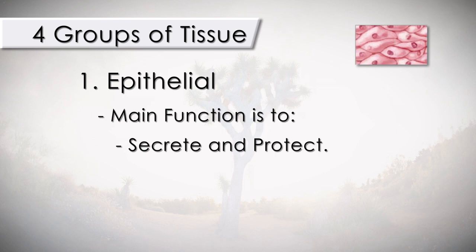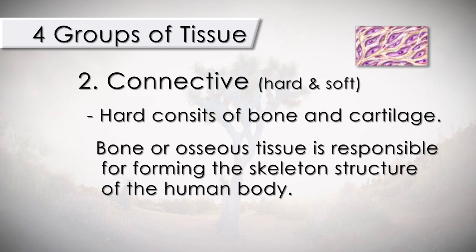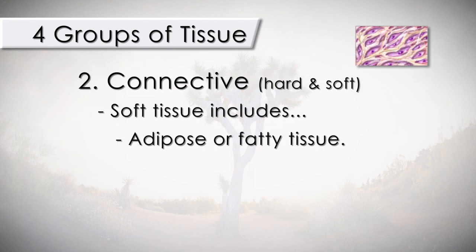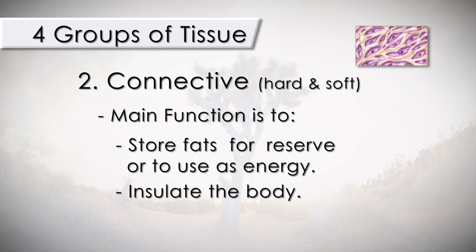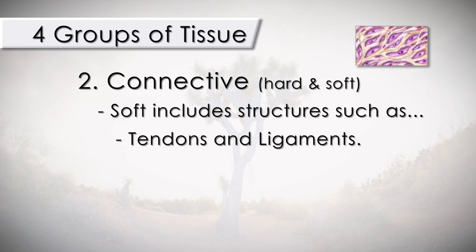There are two types of connective tissue: hard and soft. Hard consists of bone and cartilage. The bone, or osseous tissue, is responsible for forming the skeleton structure of the human body. Cartilage is a tough, elastic structure that is found between the bones and in the nose, ears, and the larynx. Soft connective tissue includes adipose or fatty tissue, whose function is to store fats for reserve or to use as energy, and it insulates the body. Soft connective tissues also include structures such as tendons and ligaments, whose main function is to help hold major body structures together, such as the skeletal and skeletal muscle systems.